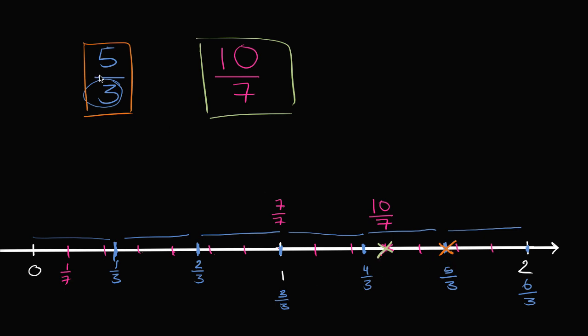So 5/3 is greater than 10/7. So how do we write the symbol? Well we always want to open it up to the larger number. 5/3 is a larger number so we want the larger side or the opening on the larger number. Or the smaller side or this point pointing to the smaller number. So we have 5/3 is greater than 10/7.